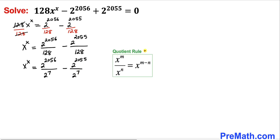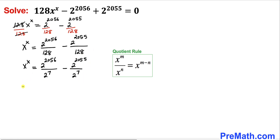Now let's recall the quotient rule of exponents and apply it to both terms on the right hand side. Therefore our equation can be written as x power x equals 2 power (2056 minus 7), which gives us 2 power 2049, minus 2 power 2048.